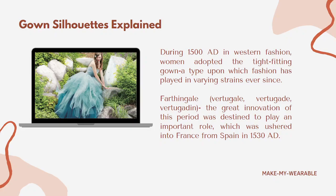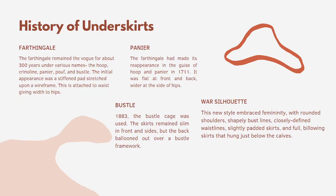The farthingale remained in vogue for about 300 years under various names like the hoop, crinoline, bustle, and panier. Its initial appearance was a stiffened pad stretched upon a wire frame. This was attached to the waist, giving width to the hips.